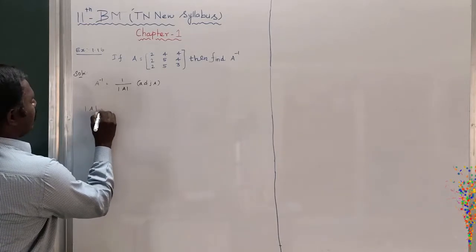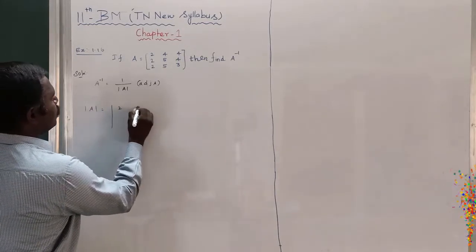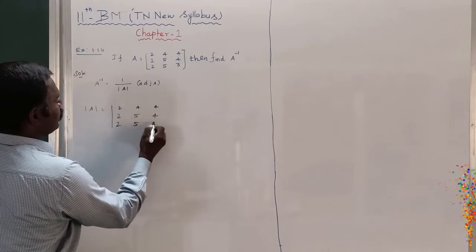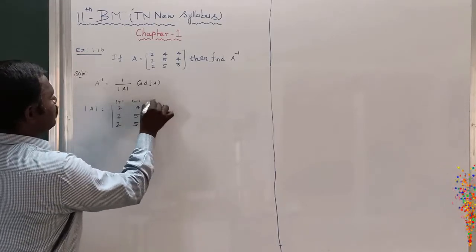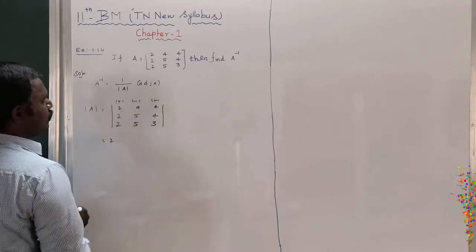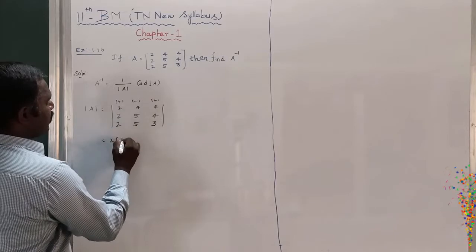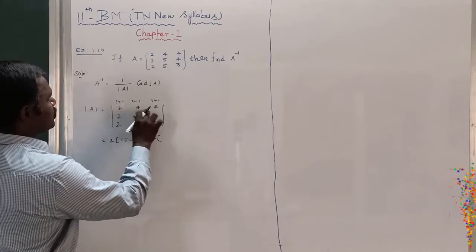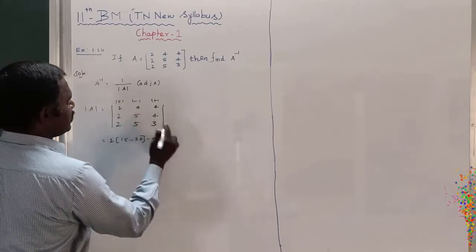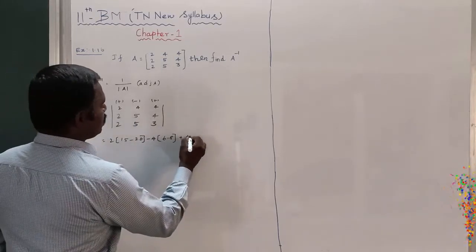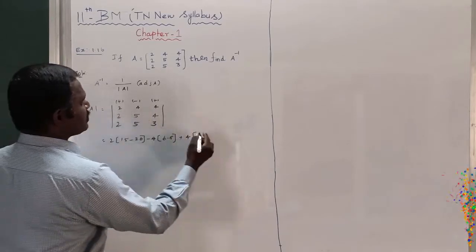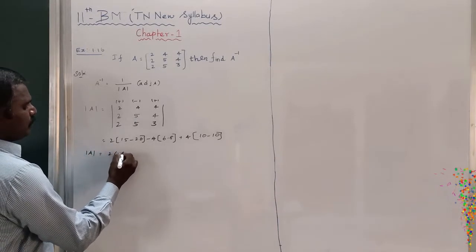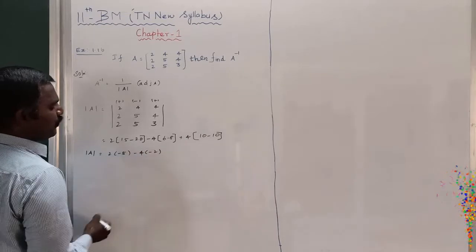Modulus of A, that is the determinant of A: [2 4 4; 2 5 4; 2 5 3]. Expanding with plus, minus, plus: 2 into (5×3 minus 5×4), minus 4 into (2×3 minus 2×4), plus 4 into (2×5 minus 2×5). That gives 2(15 minus 20), minus 4(6 minus 8), plus 4(10 minus 10), which is 2(minus 5), minus 4(minus 2), plus 4(0).